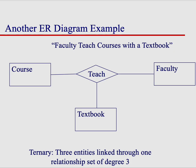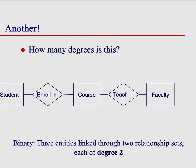But you could also have something that looks like this. Here, in this case, we have student enrolls in courses, and courses are taught by faculty members. In this case, there are multiple binary relationships.